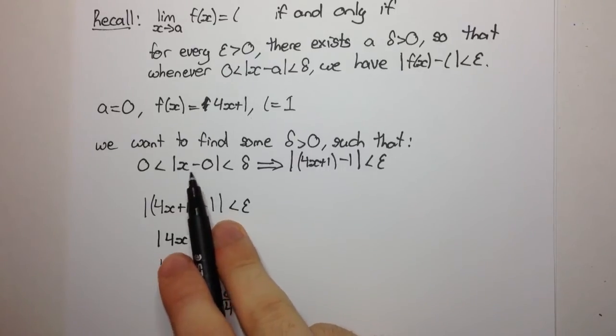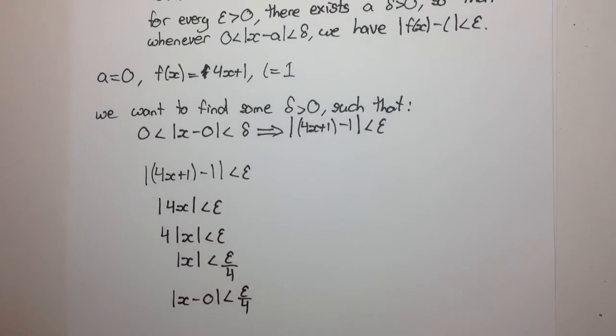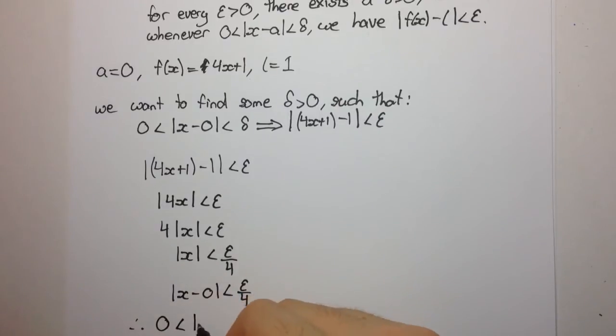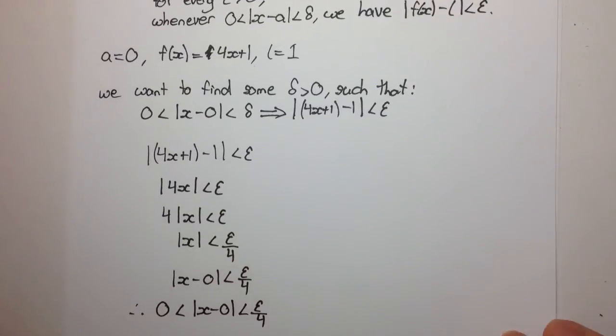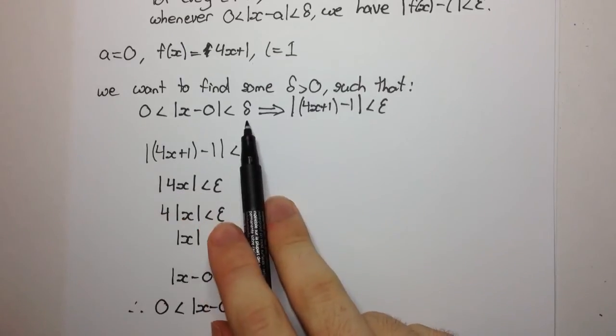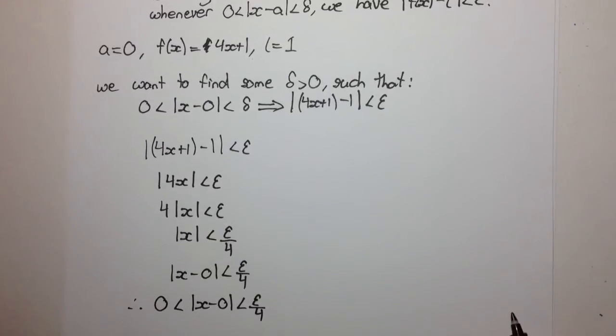You'll see that this here is really the absolute value of x isn't it? x minus 0 well that's just x, but I'm going to write it like this so we can see clearly what we want. Now this absolute value is less than epsilon on 4 but since it's an absolute value we can be sure that it's definitely positive, so we can say therefore 0 is less than this absolute value which is less than epsilon on 4. Now hopefully you can see why I've written it like this because this is almost identical to what we have up here. The only difference being that this here is a delta and this is epsilon on 4.